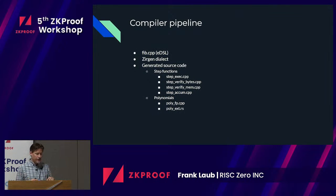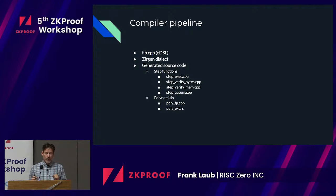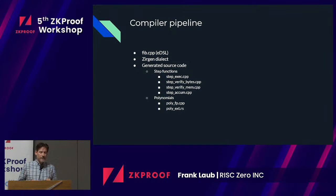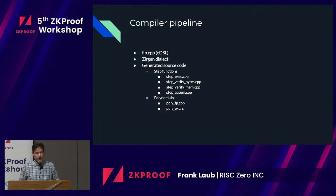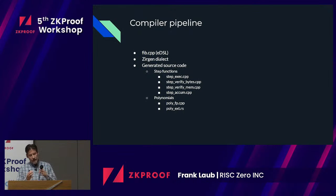When I talk about the Fibonacci sequence, I'll show an example. We're going to write the circuit in C++. We then have what we call the Zergen dialect — this is an MLIR dialect. We do a bunch of passes and then generate two kinds of groups of source code: step functions and polynomials. The step functions are there for us to generate the execution trace, and the polynomials are the set of all constraints that go together to verify that the thing is correct.